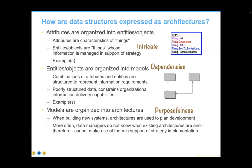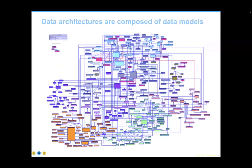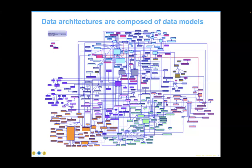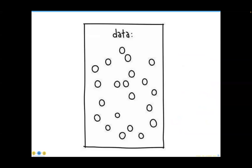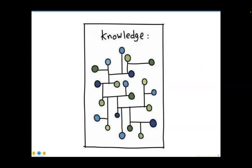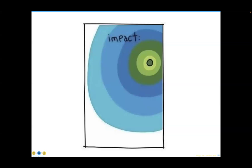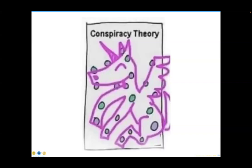In the data world: attributes are organized into entities and objects for intricacy; entities and objects are organized into models for dependencies; and models are organized into architectures for purposefulness. Architectures are often very complex and require case tool support to manage the metadata involved. On the topic of data definitions, there's a useful hierarchy: data leads to information, to knowledge, to insight, to wisdom, to impact.